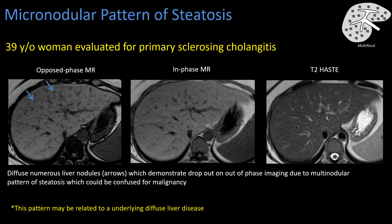Micronodular steatosis can be a diagnostic dilemma. On CT it can often look like there are multiple tiny focal nodules throughout the liver. On MRI we should see a relatively homogeneous in-phase with those nodules becoming apparent on our opposed phase, but often not apparent on a T2-weighted image. This multi-nodular steatosis on CT can sometimes look like diffuse micrometastasis to the liver, granulomatous disease, or sarcoidosis. We most commonly see this micronodular steatosis in patients with another known underlying liver disease like primary sclerosing cholangitis or cirrhosis.